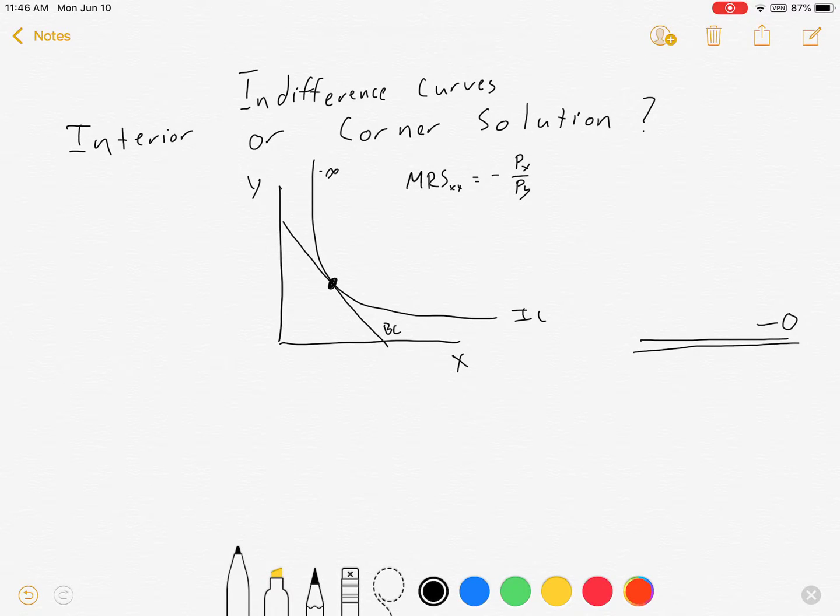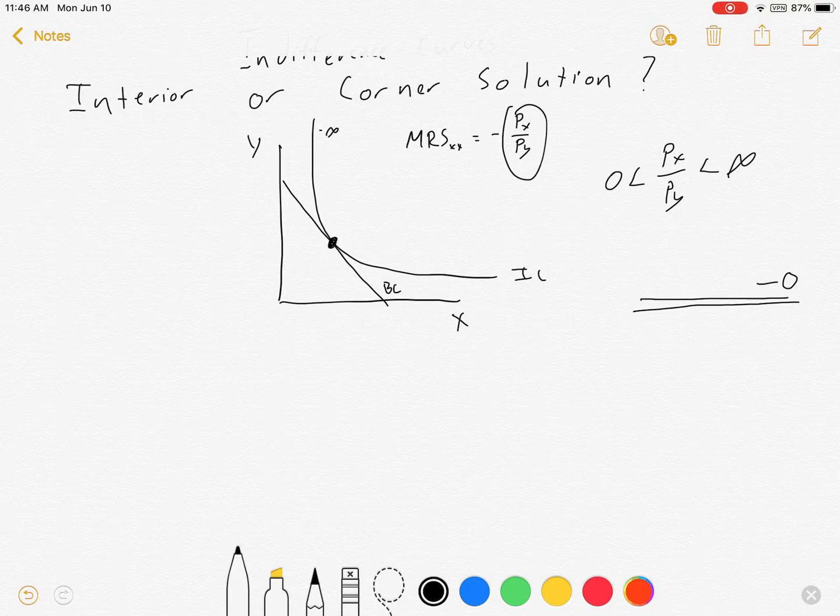Which means that as long as our price ratio falls somewhere between 0 and infinity, there will be an interior solution. So as long as our goods cost something, there will be an interior solution.